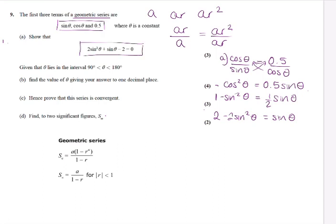I'm now going to find θ, so I'm going to solve this. I'm just going to stick it into my calculator. A is 2, B is 1, C is minus 2. And it's going to tell me sine θ equals either minus 1 plus root 17 over 4, which gives me 0.78077, or minus 1 point something.